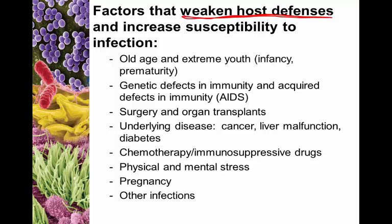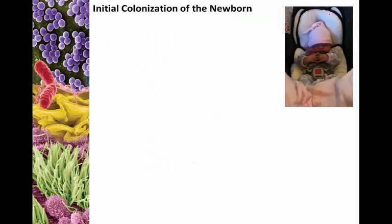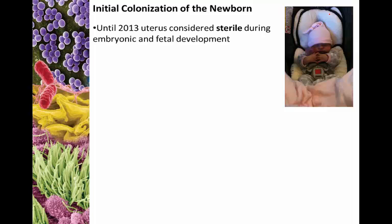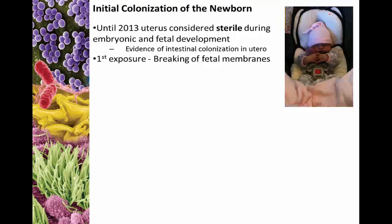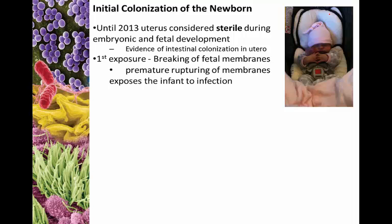Regarding bacterial colonization of the newborn: until 2013 the uterus was considered a sterile environment, but now we see evidence of intestinal colonization in utero — microorganisms making their way into the GI tract and colonizing the large intestine before birth. The most comprehensive first exposure happens with the breaking of the fetal membrane, and premature rupturing can predispose an infant to certain infections.